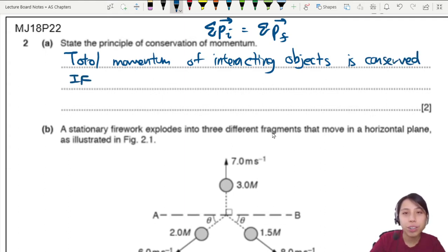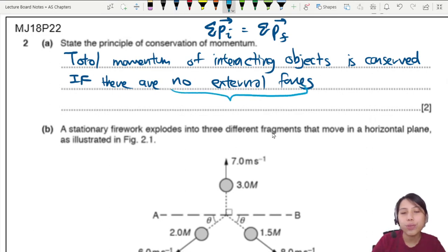If, must add the condition. What's the condition? If there are no external forces. So in other words, you could also, instead of saying no external forces, you could say this is an isolated system. So, which means no external forces.